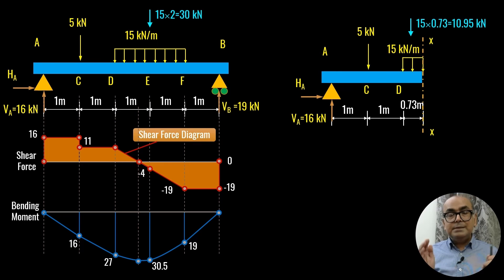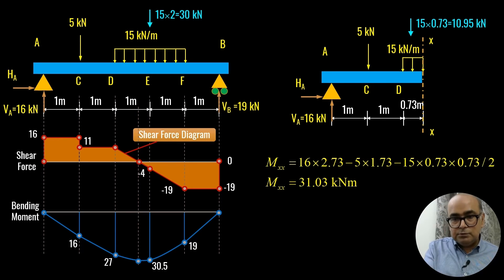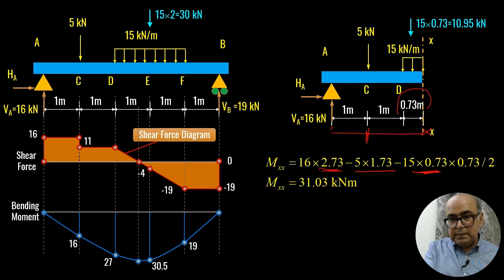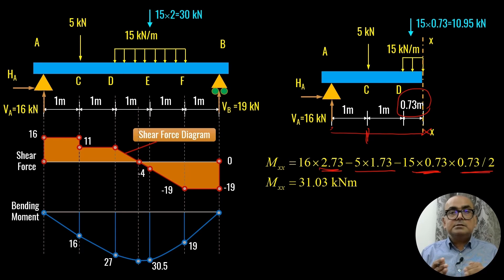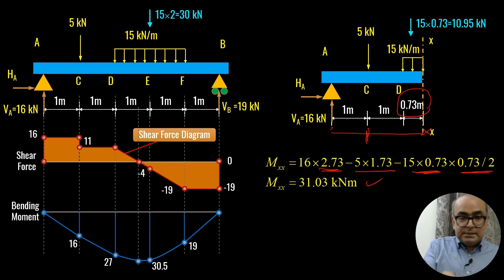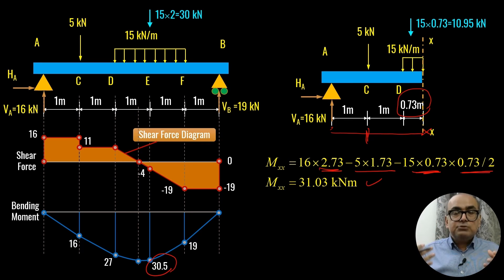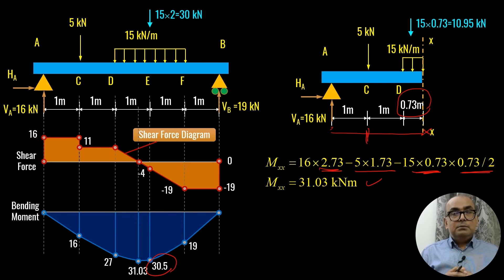Taking a section at x = 0.73 m from D to find the maximum bending moment: 16×2.73 − 5×1.73 − 15×0.73×(0.73/2). The UDL always acts at half the distance over which it is spread, hence the 0.73/2 factor. Simplifying gives a maximum bending moment of 31.03 kNm. This is slightly higher than the 30.5 kNm at point E. The bending moment diagram is then hatched to complete the drawing.